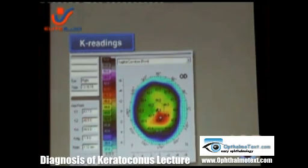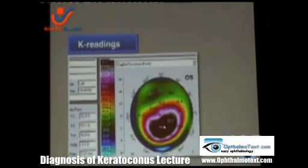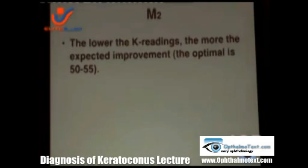Regarding the K readings, when we have K readings in the maximal part of the cornea — like this one at 47 — results will be much better than if we have a steeper cornea. The optimal results will be achieved when we have between 50 and 55 K readings.